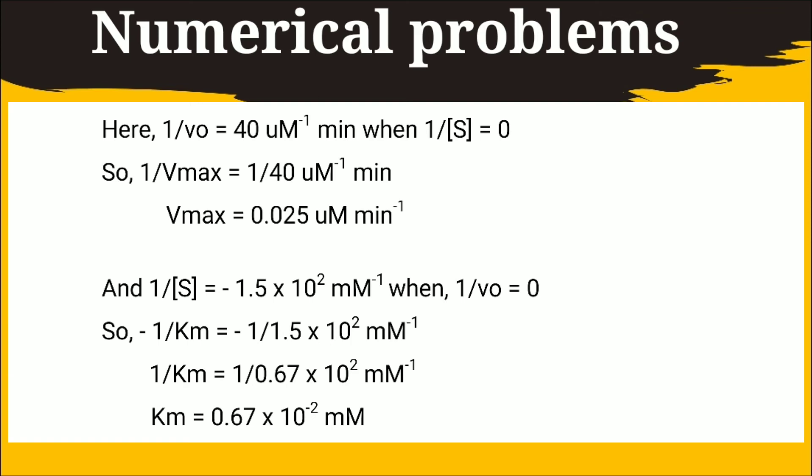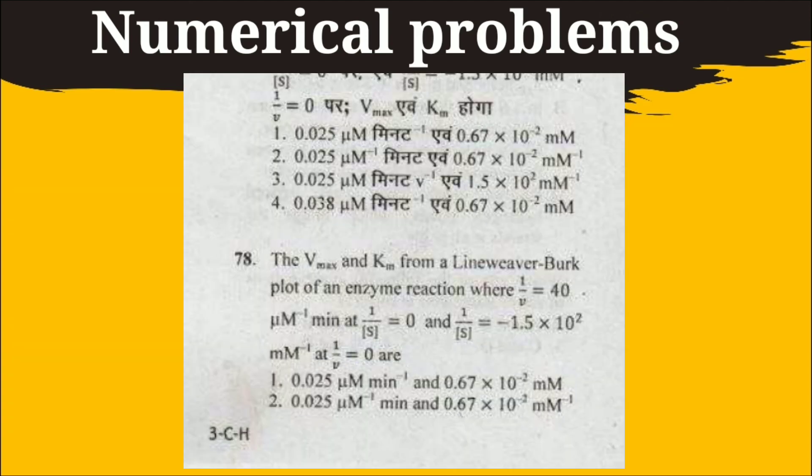We know that y-axis intercept is 1 by Vmax. So the value of 1 by Vmax is calculated in this way. Watch carefully. The unit is also changed. And now I will calculate the value of Km. And again we know that x-axis intercept is minus 1 by Km. So the value of Km is calculated in this way. So the answer is A.